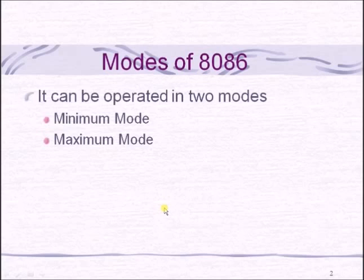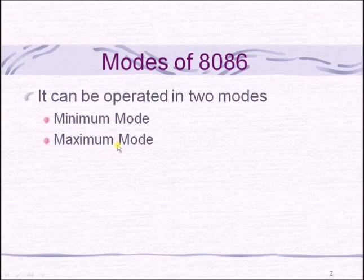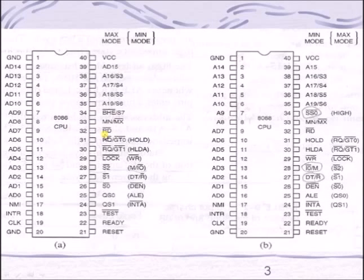The 8086 can be operated in two modes: minimum mode and maximum mode. In minimum mode, one processor along with memory and input-output devices are connected to the system bus, so it is also called single processor mode. In maximum mode, multiple processors — more than one — along with memory and input-output devices are connected to the system bus, so it is called multiprocessor mode. The pin structure is represented in two forms: one showing minimum mode signals and the other showing maximum mode signals.